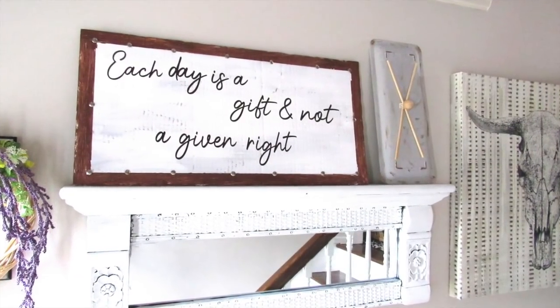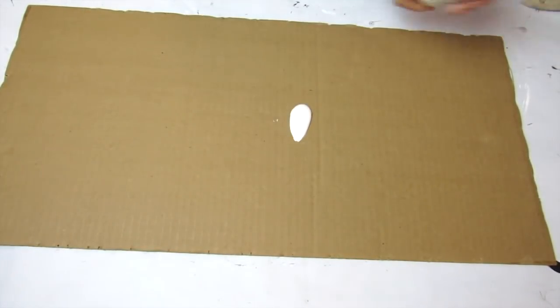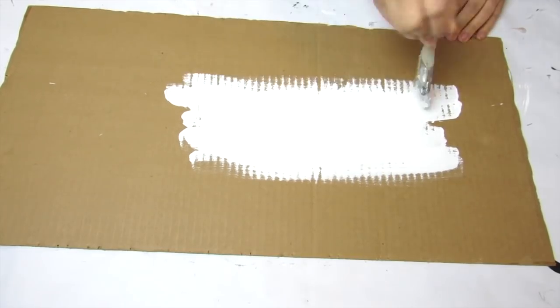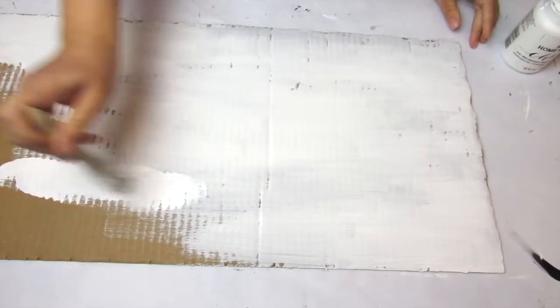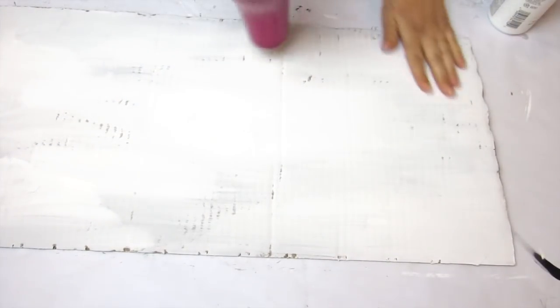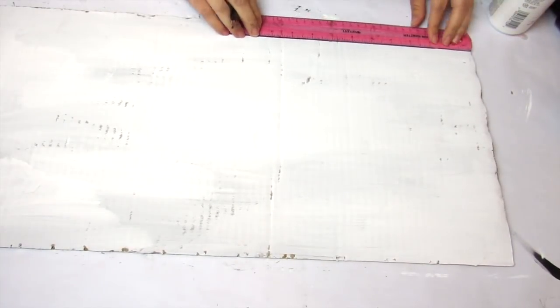Trash to treasure number two is going to be this farmhouse style sign using a leftover piece of cardboard. I've had this piece of cardboard randomly in my craft room forever. I decided to give it a good coat of the same chalk paint—the Folk Art White Adirondack chalk paint. Cardboard pieces like this make great canvases for a picture.